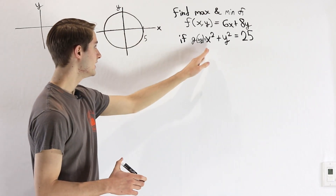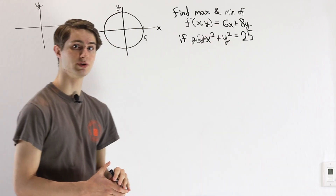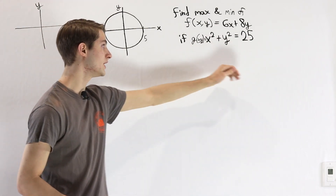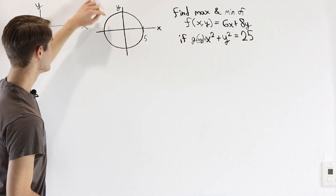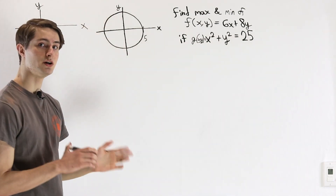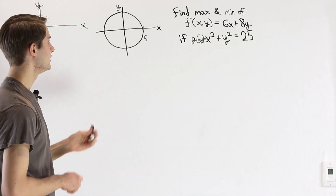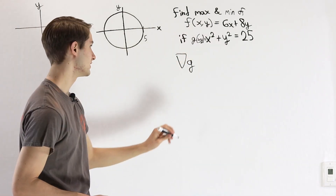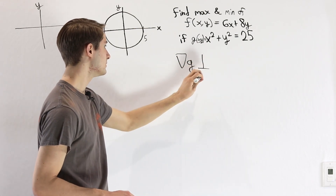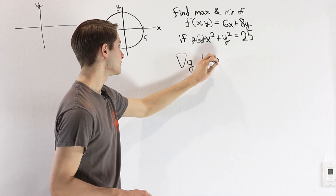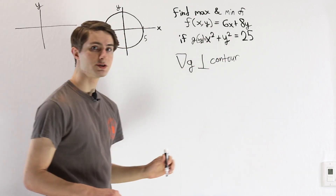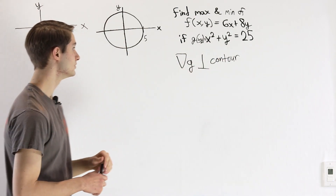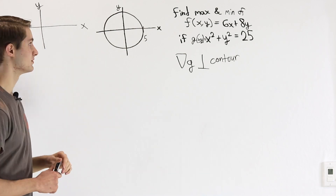Remember, if we're looking at x squared plus y squared equals 25, that's essentially a situation where our function g is a constant. So we can think about this circle as a contour line of our function g. In that case, we know that the gradient of g, that is x squared plus y squared, must be perpendicular to the contour line. You can watch my video on gradient vectors in the description to see why this is true, but this is the first piece of information we need.